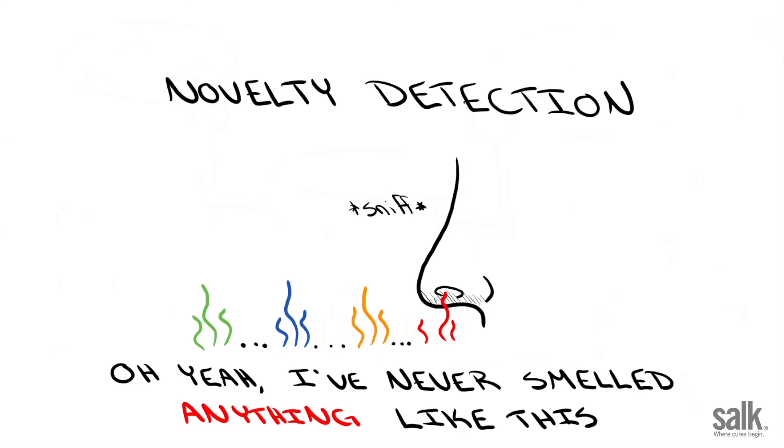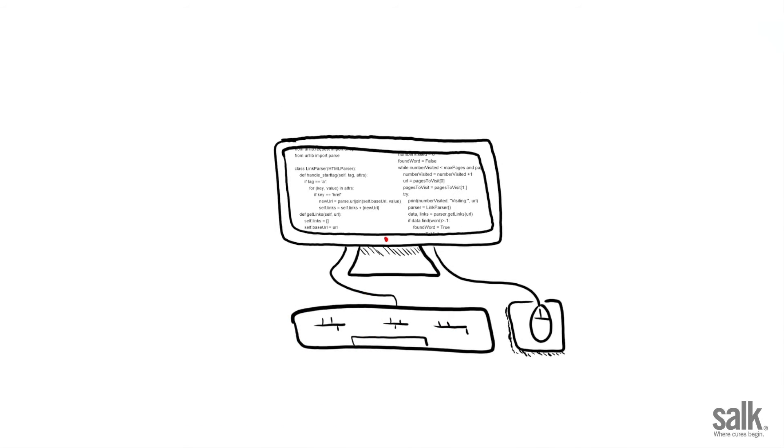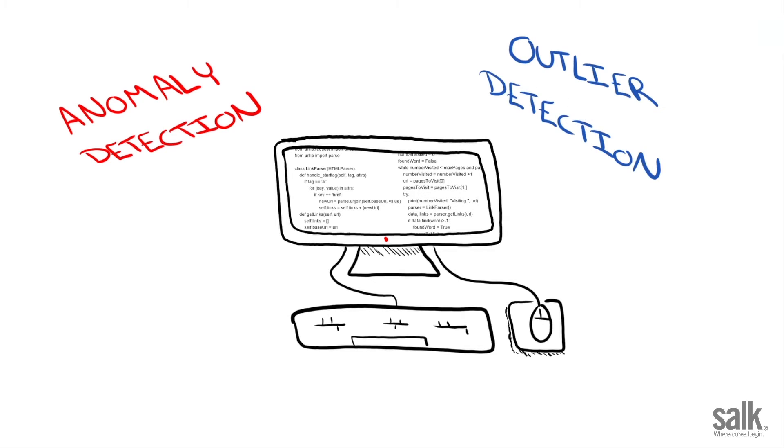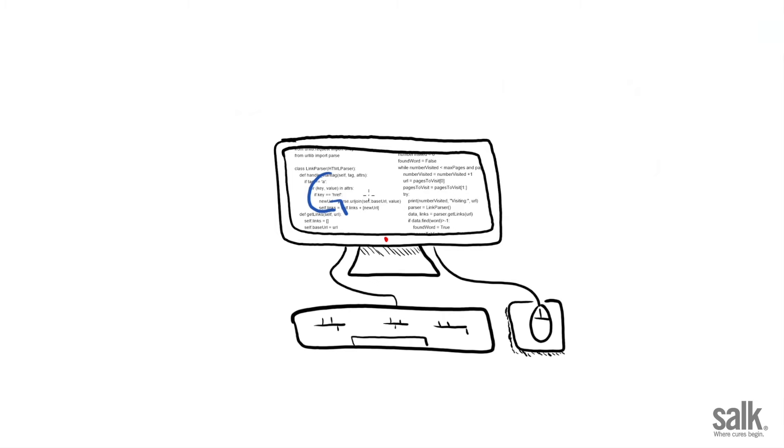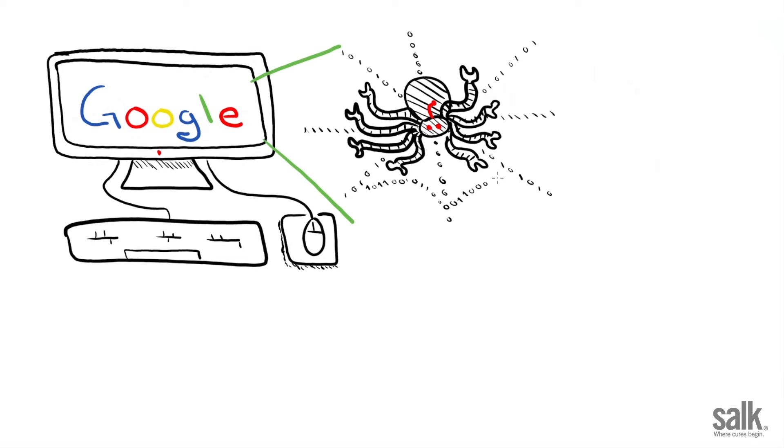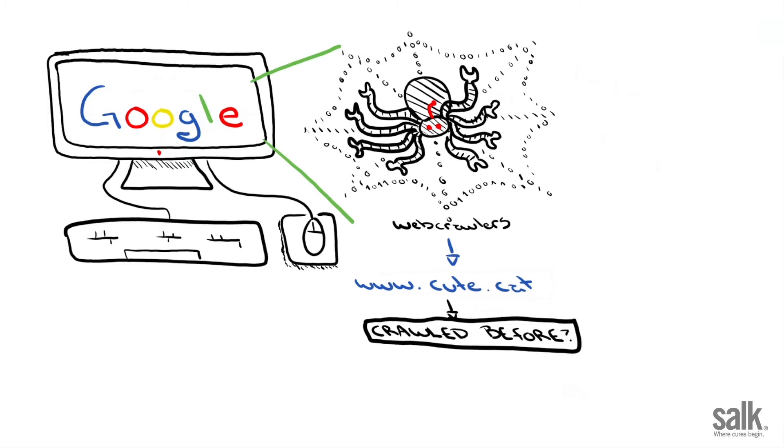Novelty detection is also a fundamental problem in computer science. It's related to anomaly detection, outlier detection, and other such problems. But let me give you an example from Google. So Google has web crawlers that index the web. And when a web crawler reaches a website, it has to ask, have I already crawled this website before?